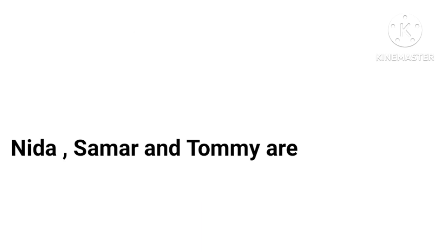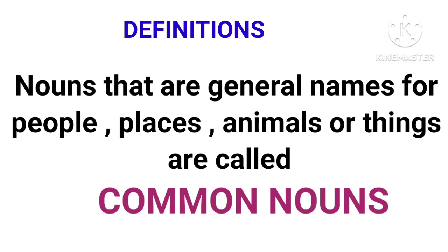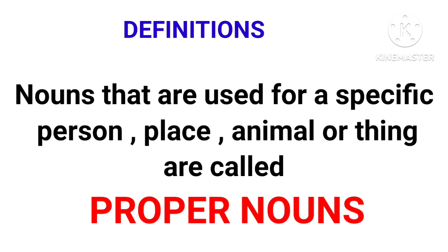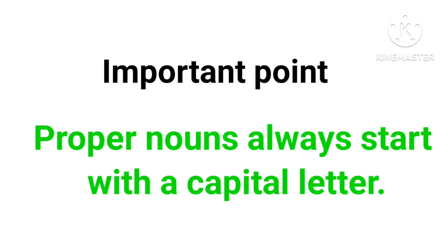Now comes the definition part. Nouns that are general names for people, places, animals, or things are called common nouns. I hope you have understood. Now, nouns that are used for a specific person, place, animal, or thing are called proper nouns. One important point: proper nouns always start with a capital letter.